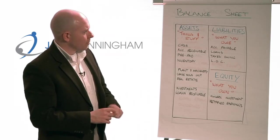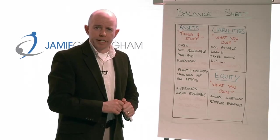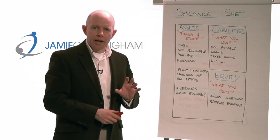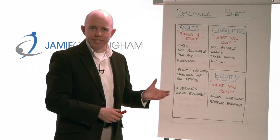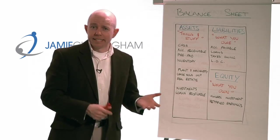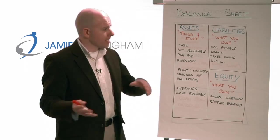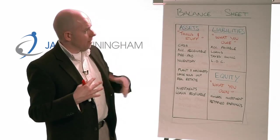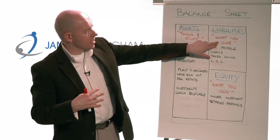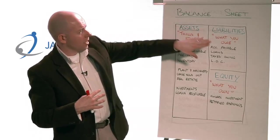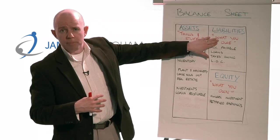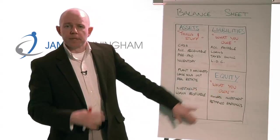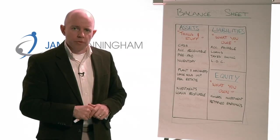I've borrowed from Keith Cunningham, who teaches a lot about financials. He's got a great way of talking about assets, liabilities, and equity. He says assets are 'things and stuff' — stuff that you've got. Liabilities is how much you owe of those things and stuff. And equity is what you own. Let me give you a simple example using your house.